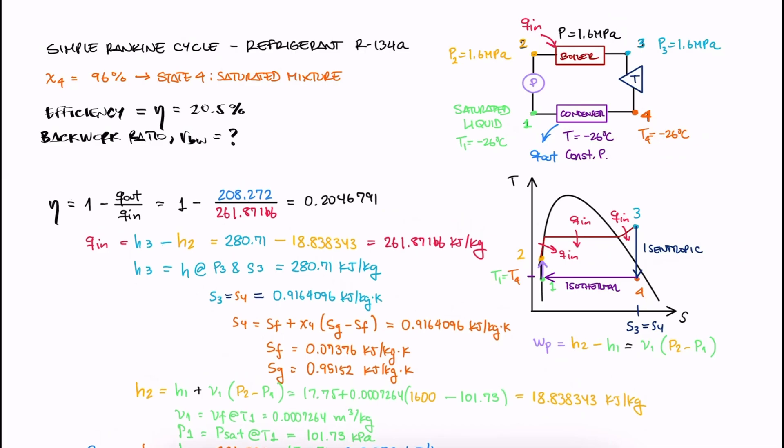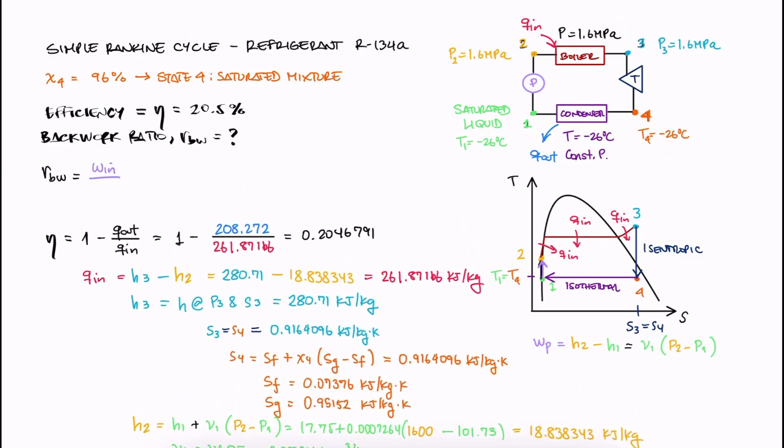Now for the back work ratio, we want W_in over W_out. The work in is the work that goes into the pump, which we kind of already calculated. And for the work out, the work that the turbine produces, we just need H3 minus H4, both of which we already found. With these we find the work in and the work out, or just directly, the back work ratio.